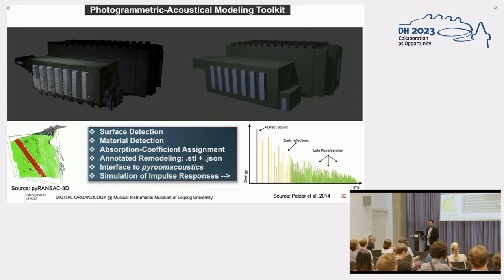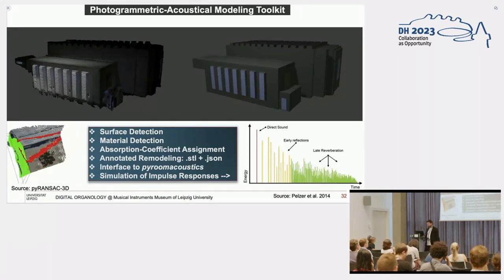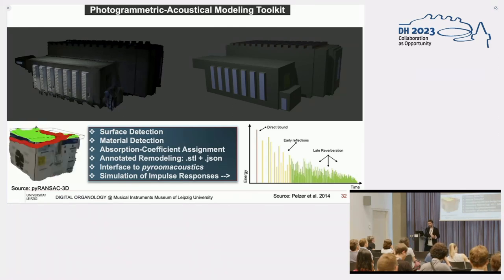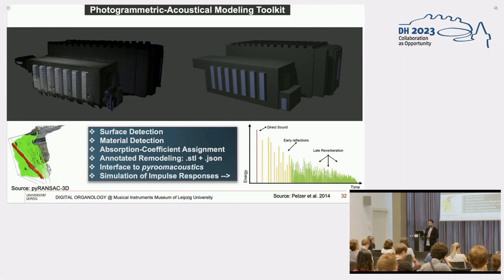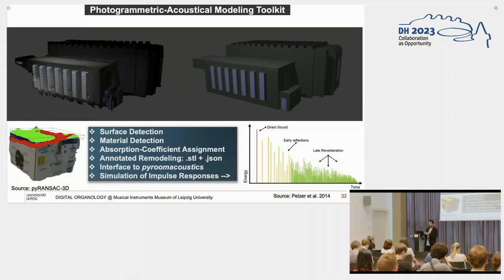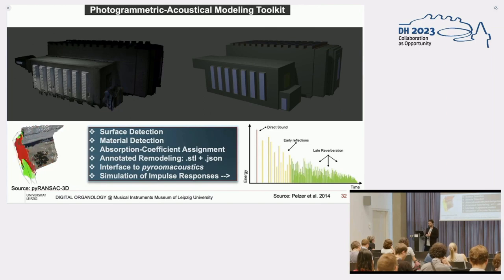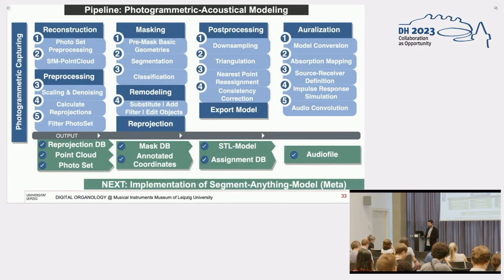You can read more about it in the proceedings of the Cultural Heritage and New Technologies Conference. I don't go much into detail, but it's basically about detecting surfaces based on the photographs and using two-dimensional pixel to three-dimensional point reprojection and to assign material coefficients. After that, I can produce impulse responses, which is like the sound of the reflection. It's like an audio file which you can convolve with other sounds. This is just a look at the pipeline. I want to extend it by the segment anything model from Meta, which is pretty good to detect objects in photographs.